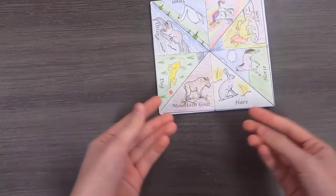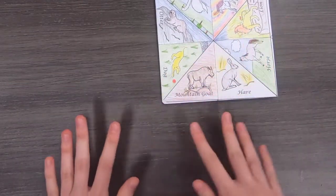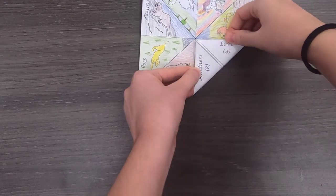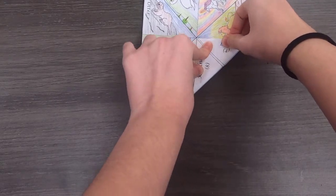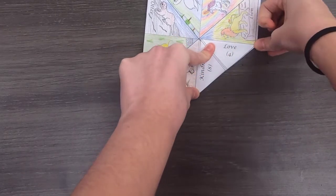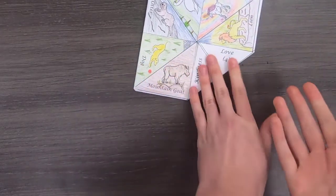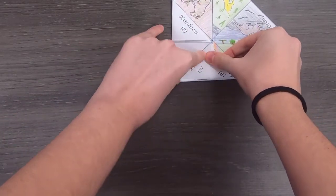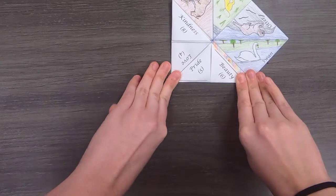You should see all of your Patronus options here. And we are going to take the corner again and fold it as close to the lines as possible. And then next corner. Again, probably seeing a pattern here.